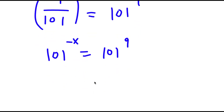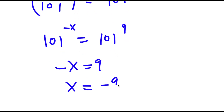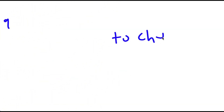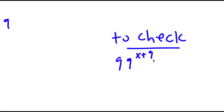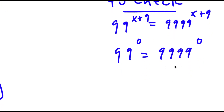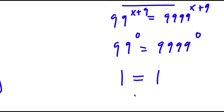So negative x equals 9, meaning x equals negative 9. To check: I have 99 to the power of x plus 9 equal to 9999 to the power of x plus 9, and we know x is negative 9. So I have 99 to the power of 0 equal to 9999 to the power of 0. Anything to the power of 0 is 1, so I have 1 equals 1, which confirms my solution is correct.